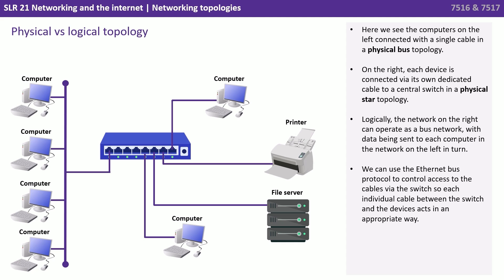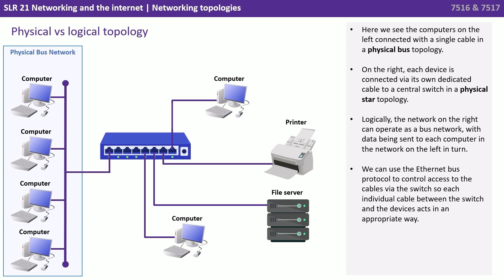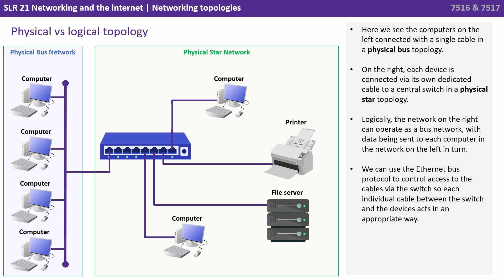Here we see computers on the left connected with a single cable in a physical bus topology. On the right, each device is connected via its own dedicated cable to a central switch in a physical star topology. Logically, the network on the right can operate as a bus network, with data being sent to each computer in turn. We can use the Ethernet bus protocol to control access to the cable via the switch, so each individual cable between the switch and the devices acts in an appropriate way.